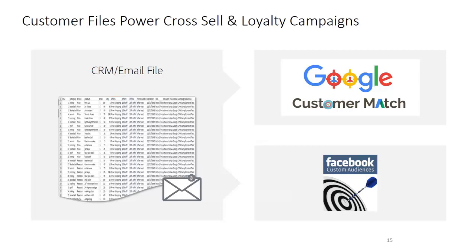Another example of a data feed could be a CRM file, a customer file, or email file. As an advertiser doing email marketing campaigns and delivering messages to your current customers, you can use that same file to deliver relevant, consistent experiences in other channels. You can take a file with email addresses and use that on Facebook Custom Audiences to deliver ads, and use it within Google Customer Match to optimize your bids — actually changing your bid amount for users that fall into that specific audience set.